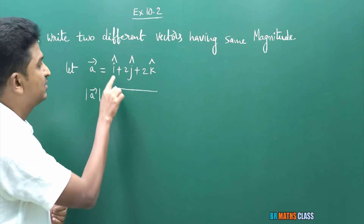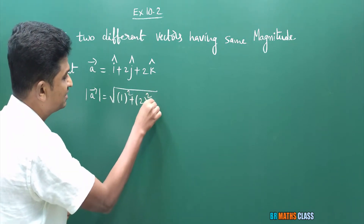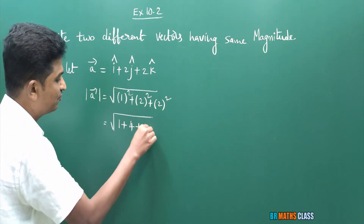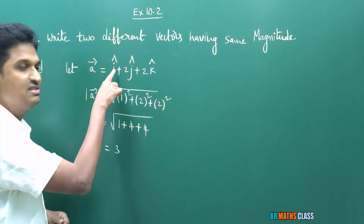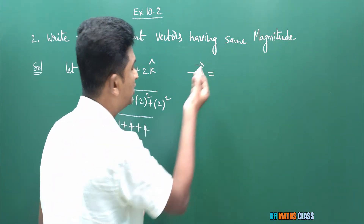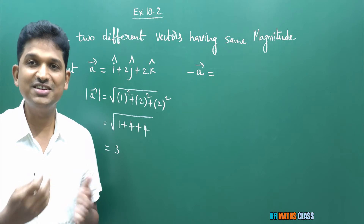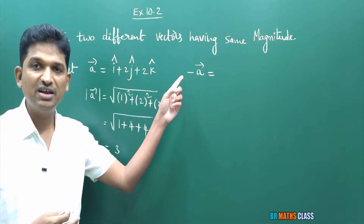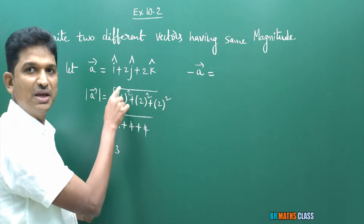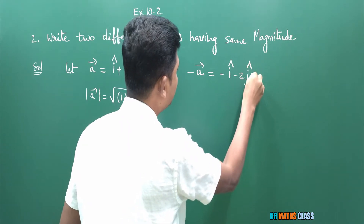The scalar components of a bar are 1, 2, 2. So the magnitude is root of 1² + 2² + 2² = root of 1 + 4 + 4 = root 9 = 3. Now consider −a bar. The direction of −a bar is exactly opposite to a bar. So −a bar = −i cap − 2j cap − 2k cap. It is 100% clear that a bar and −a bar are different vectors.